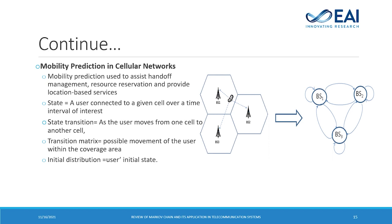Mobility prediction in cellular networks was seen in the previous example, but to examine it in detail: the state is a user connected to a given cell over time, and the state transition occurs when a user moves from one cell to another. The transition matrix represents the possible movement of the user within the coverage area, and the initial distribution represents the user's initial state. This is the transition diagram for mobility prediction, and using this matrix, mobility prediction for cellular networks is modeled using a Markov chain model.